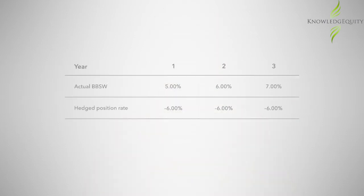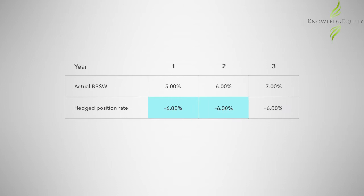The following BBSW rates apply at each settlement date and we can confirm the actual rate of the hedged position. The actual BBSW in years one, two, and three are five, six, and seven percent respectively. The hedge position rate is however six percent in each year.